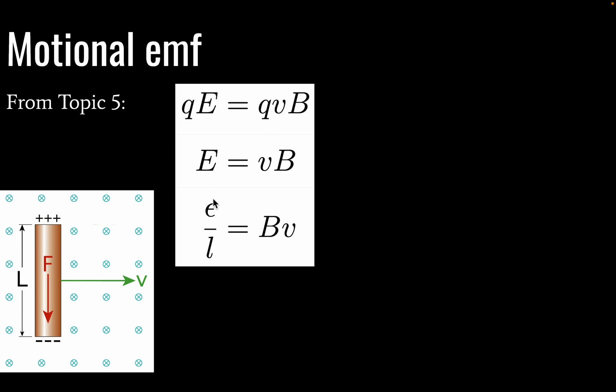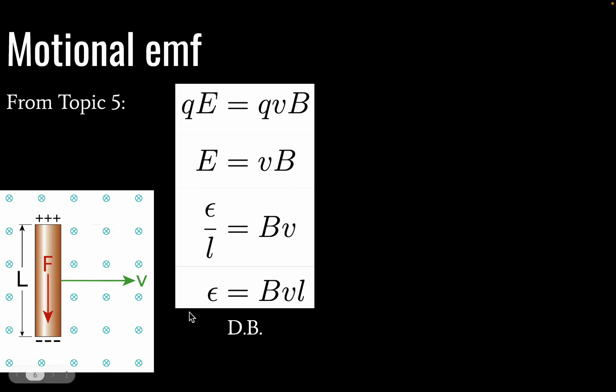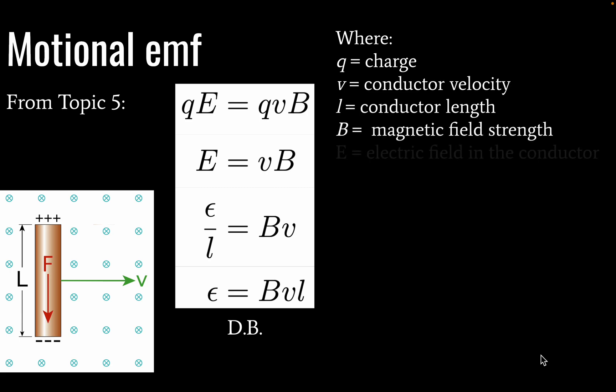We then substitute our previous equation for E and what we're going to find then is that EMF is equal to our magnetic field strength times velocity times the length of this conductor L. This is in the data booklet and just clearly defining all of our variables here. Note that this charge in most cases is going to be the fundamental charge 1.6 times 10 to the negative 19 coulombs.